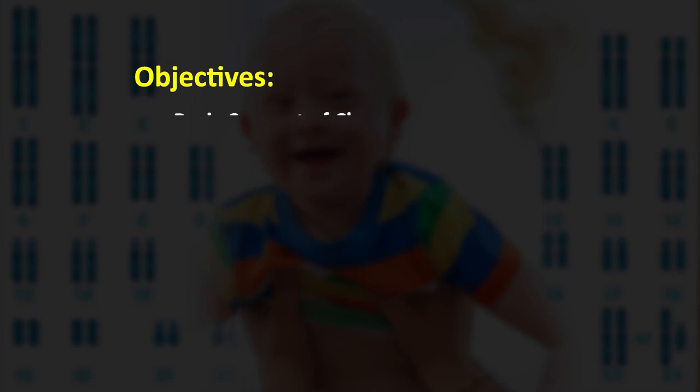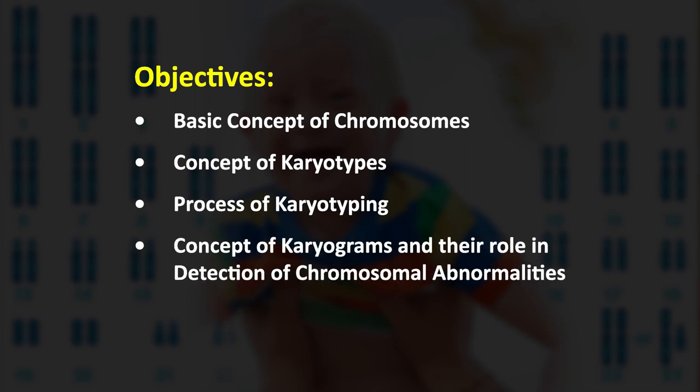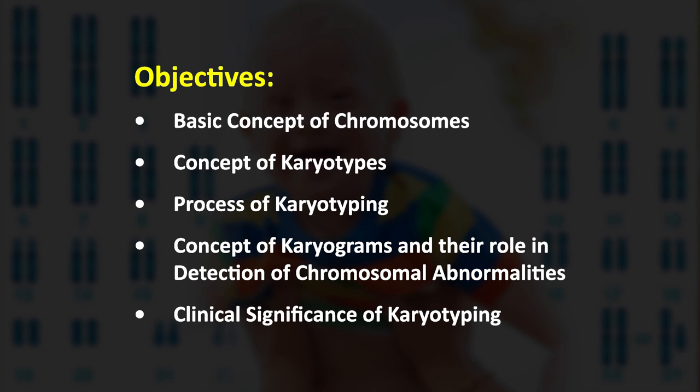Hello and welcome dear students. Today we are going to discuss the topic: Karyotypes and Identification of Chromosome Variation. The main objectives of today's lecture are: to know the basic concept of chromosomes, to understand the concept of karyotypes, to understand the process of karyotyping, to learn about karyograms and their role in detection of chromosomal abnormalities, and finally to discuss the clinical significance of karyotyping.